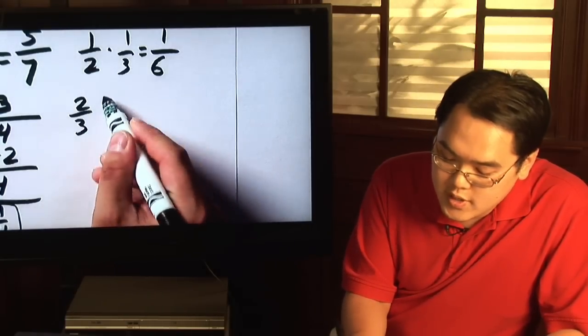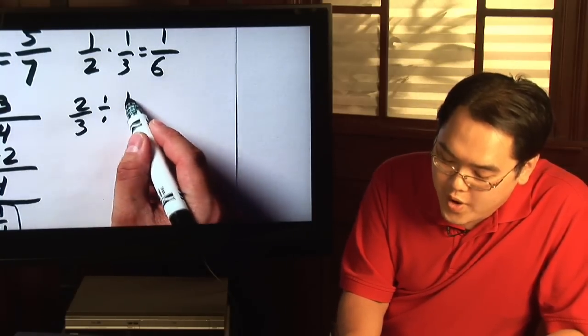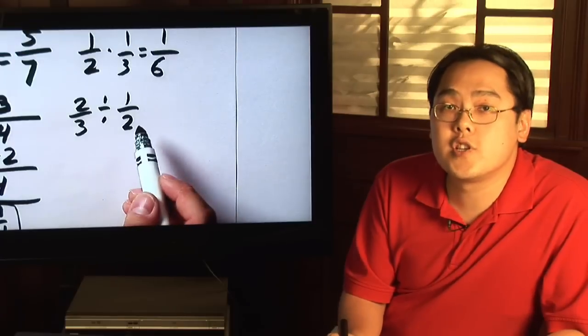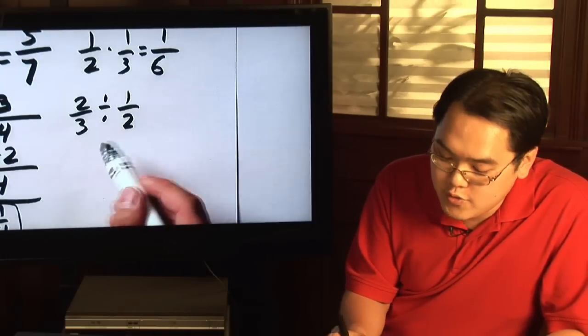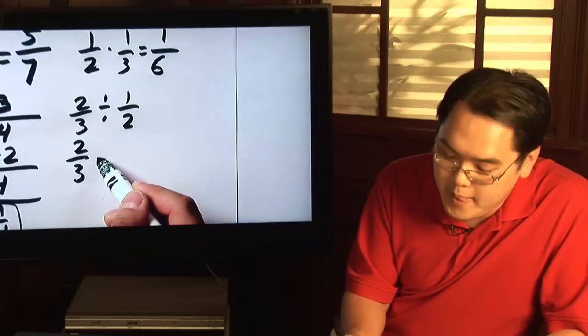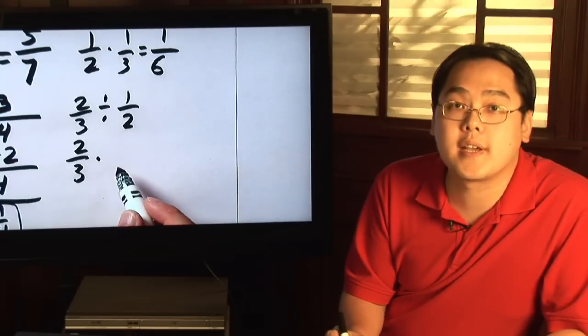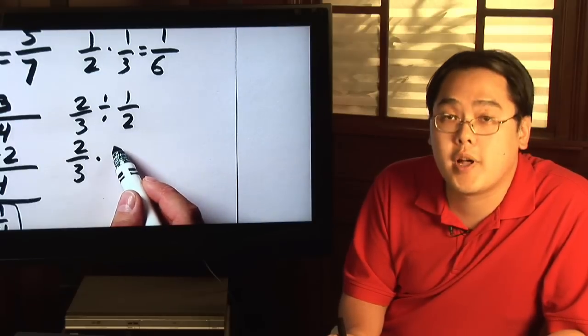But if you have two thirds divided by one half, division of fractions means that you have to treat this as a division problem. But you have to flip the second fraction. In other words, multiply it by the reciprocal.